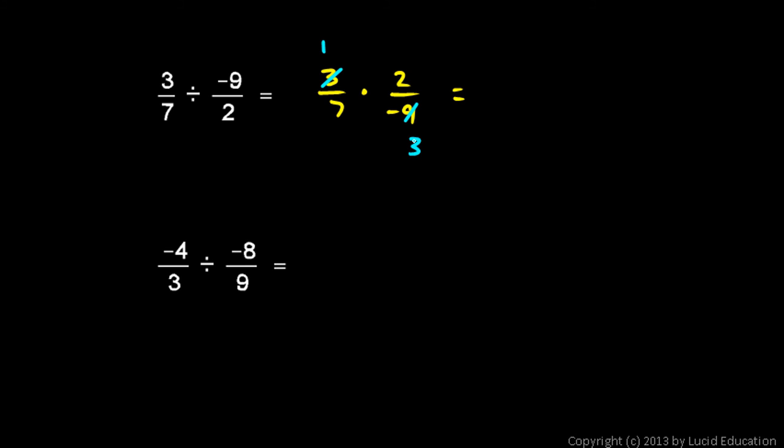Our answer will be negative, because we have one number multiplied by another, and one of them is negative. So multiply the numerators, 1 times 2 is 2. And multiply the denominator, 7 times 3 is 21. 2 over 21, and it's negative, so negative 2 over 21 is the answer.